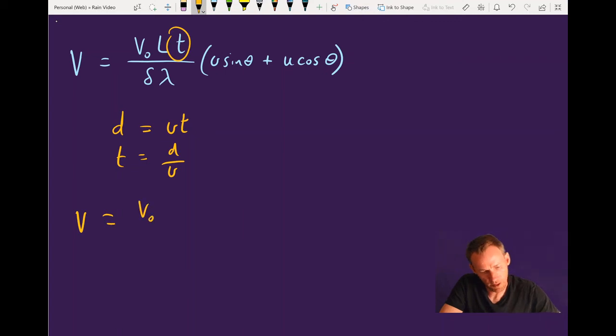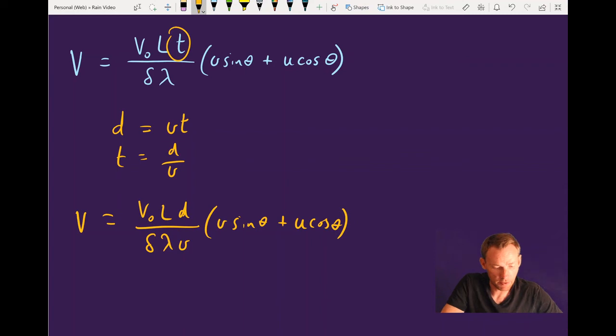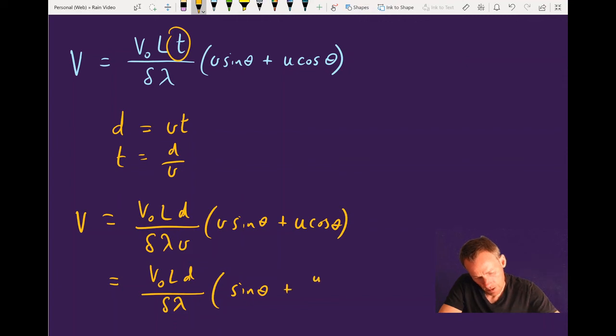So V is v naught L D over delta times lambda times V. And then the parentheses are the same. Finally, just multiply through by this factor of one over V into the parentheses. So we're back to just two distances here at the bottom. V's cancel in this first term. And in the second term, we have a ratio of U over V. And the new thing that this is telling us is that for a fixed distance D, if we increase our horizontal velocity, then this whole term goes down.